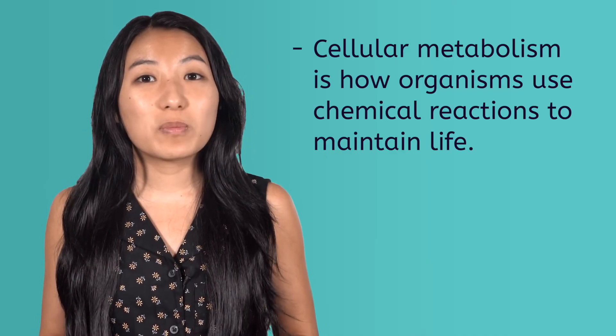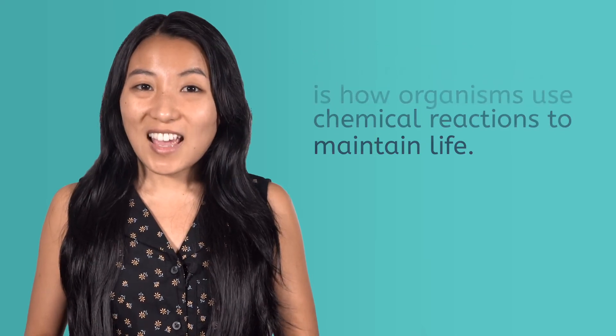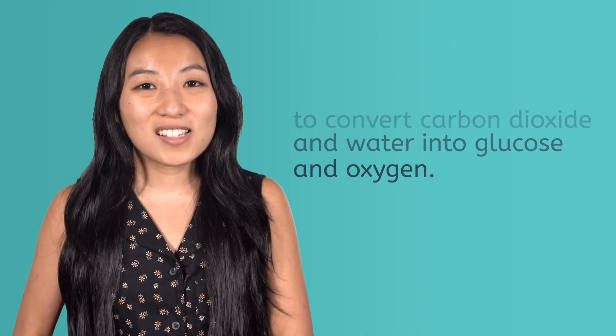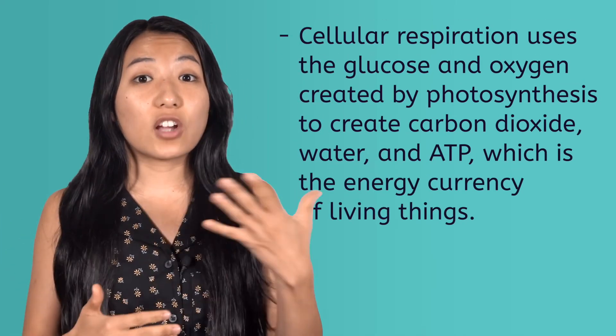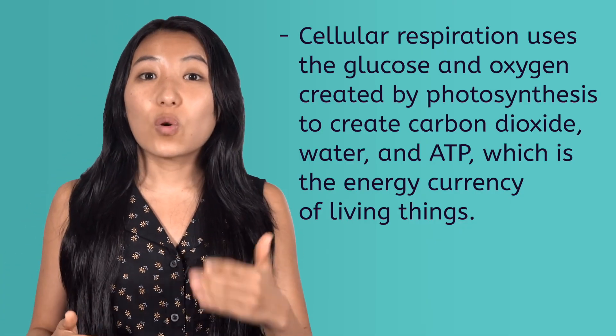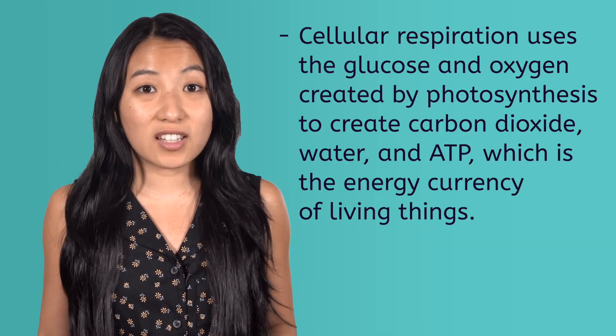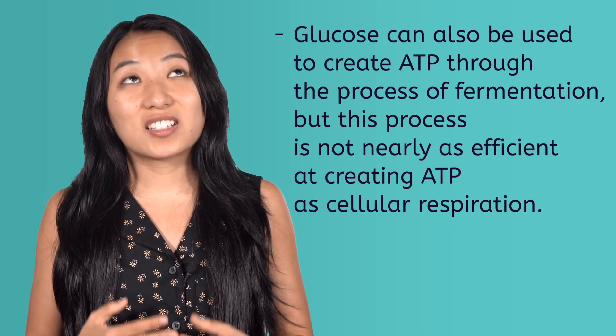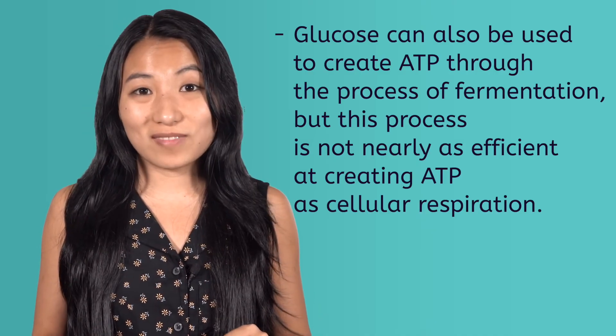We have now covered the basics of cellular metabolism, which is how organisms use chemical reactions to maintain life. Photosynthesis harnesses the energy from sunlight to convert carbon dioxide and water into glucose and oxygen. Cellular respiration uses glucose and oxygen to create carbon dioxide, water, and ATP — the energy currency of living things. Glucose can also be used to create ATP through fermentation, though this process is not nearly as efficient as cellular respiration. In our next lesson, we'll dive deeper into cellular processes as we unravel the mysteries of the cell cycle. Until then, I'm Caroline — remember, life is full of wonders, so keep learning and don't ever stop wondering.